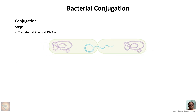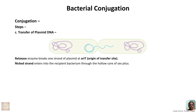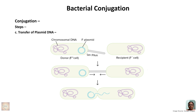The third step is transfer of plasmid DNA. In the donor bacterium, an enzyme called relaxase breaks one strand of the plasmid DNA at a specific point called the ORIT (origin of transfer site). This nicked strand enters the recipient bacterium — a single strand of plasmid DNA is transferred through the hollow core of the sex pilus. The other strand remains in the donor cell, so both donor and recipient cells now possess one strand of plasmid each.